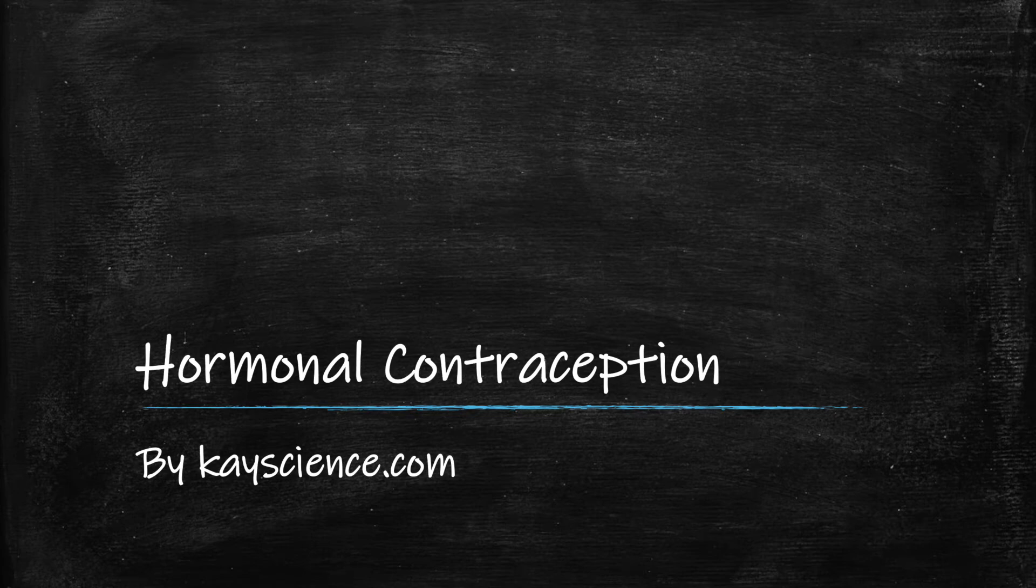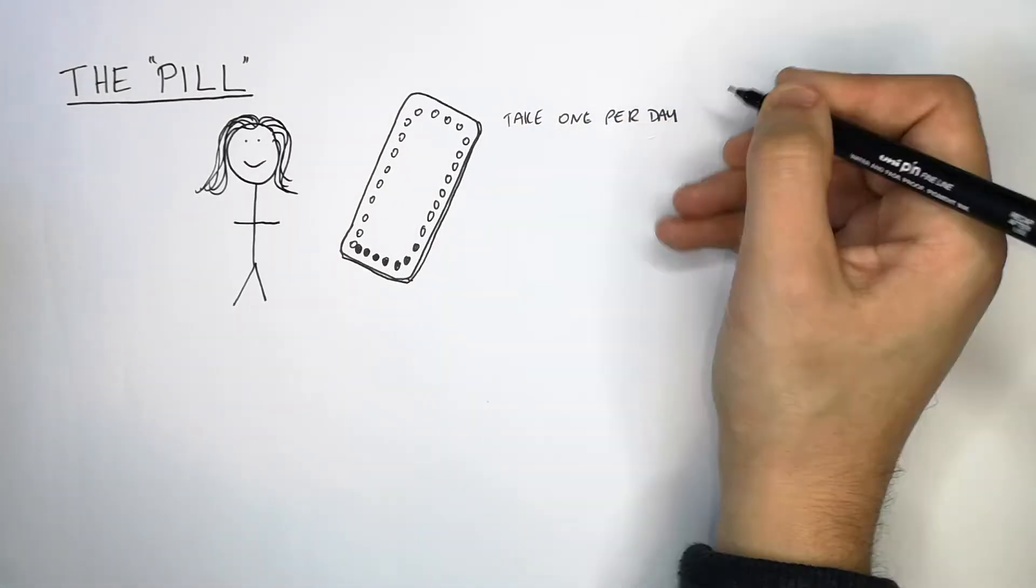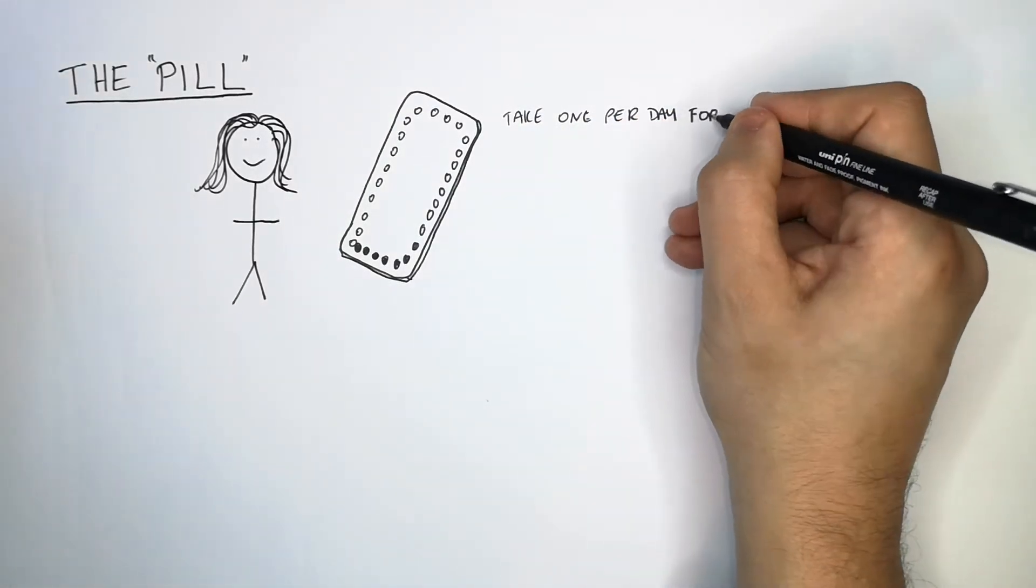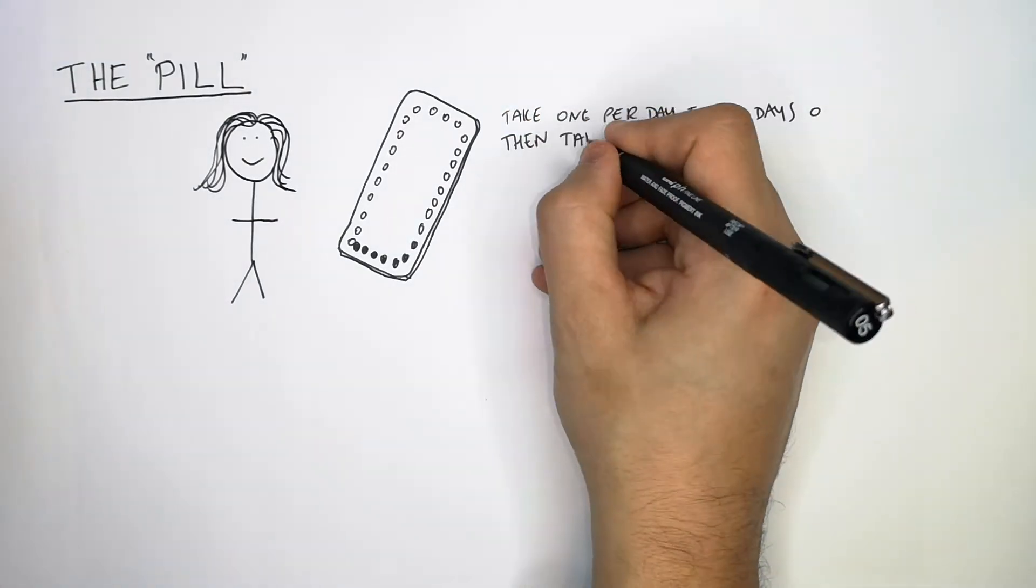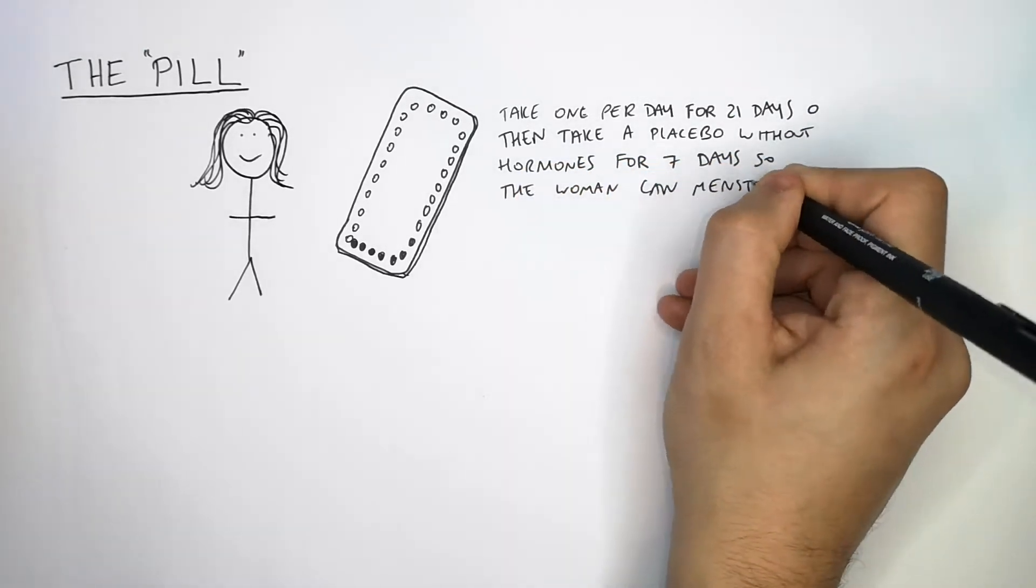Hormonal Contraception by kscience.com. The first contraceptive we're going to talk about is the pill. The female will take one pill per day for 21 days, then take a placebo without the hormones for seven days so she can menstruate.